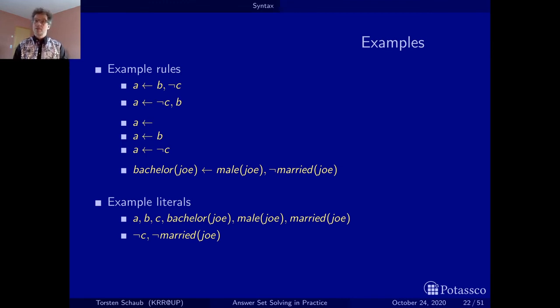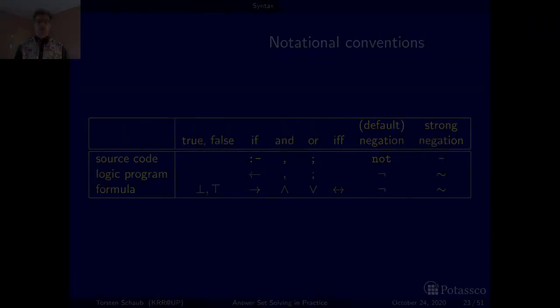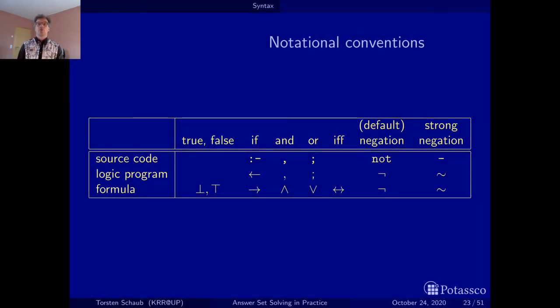Last but not least, let me mention some notational conventions I'm using throughout the lecture. I'd like to distinguish three levels. One is the source code, the logic programs in the mathematical interpretation, and formulas, which is a more general thing than programs that just consist of rules. They are the standard logical symbols. They are the logical constants, true and false, and they basically appear on the level of formulas and are denoted by the bottom and the top symbol.